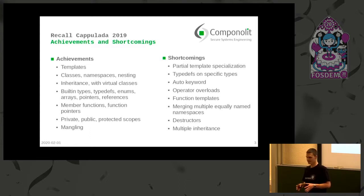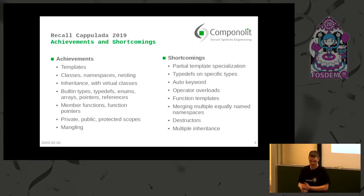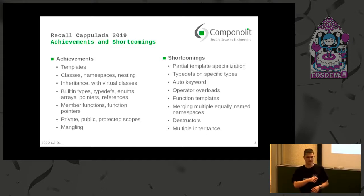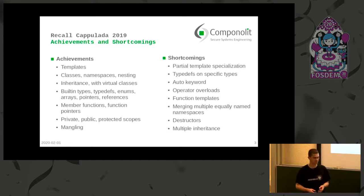So what are the things we didn't achieve? One great but also really complex feature of C++ are partial template specializations — this is something we didn't make work. Also there are many things we could have done with just more effort, like many edge cases such as typedefs on specific types, the auto keyword, operator overloads, function templates, and so on. But there are also things we didn't even try to do, like destructors or multiple inheritance.